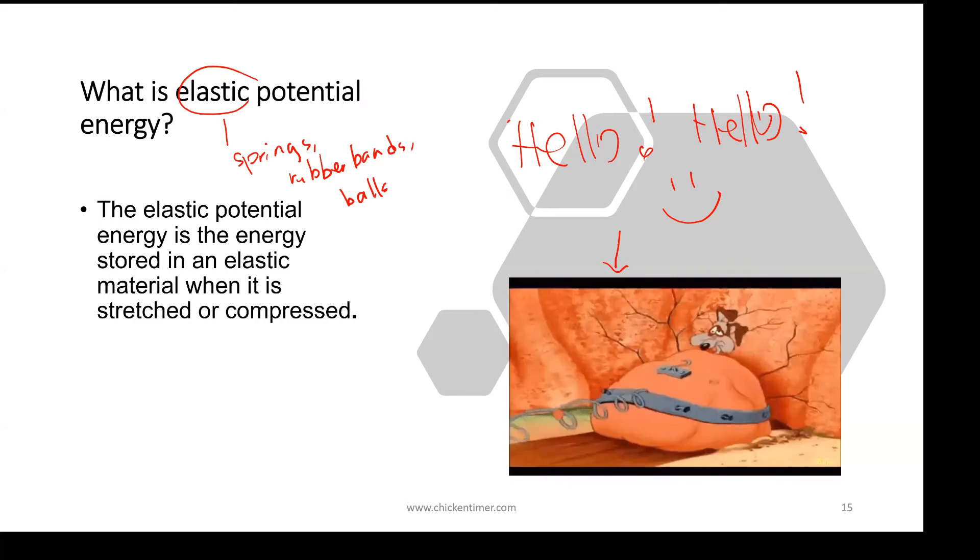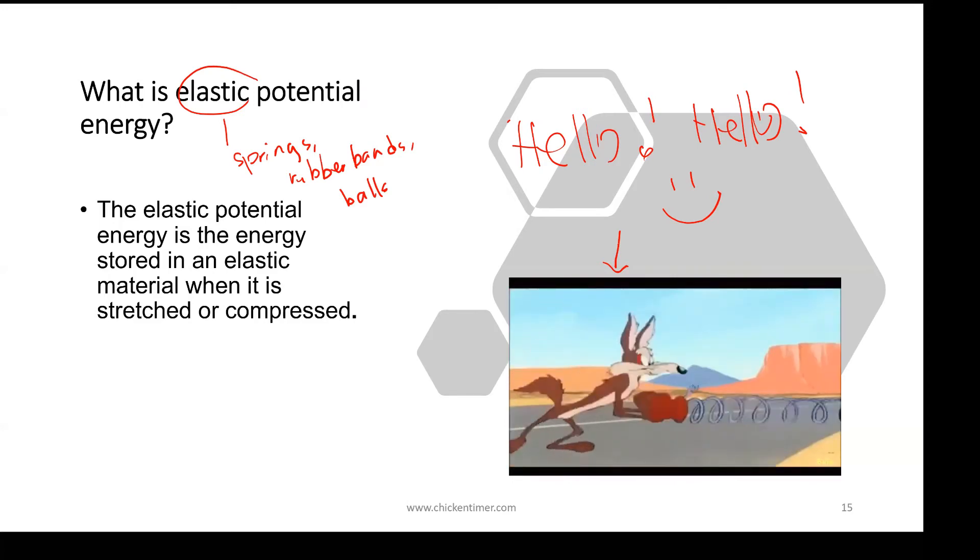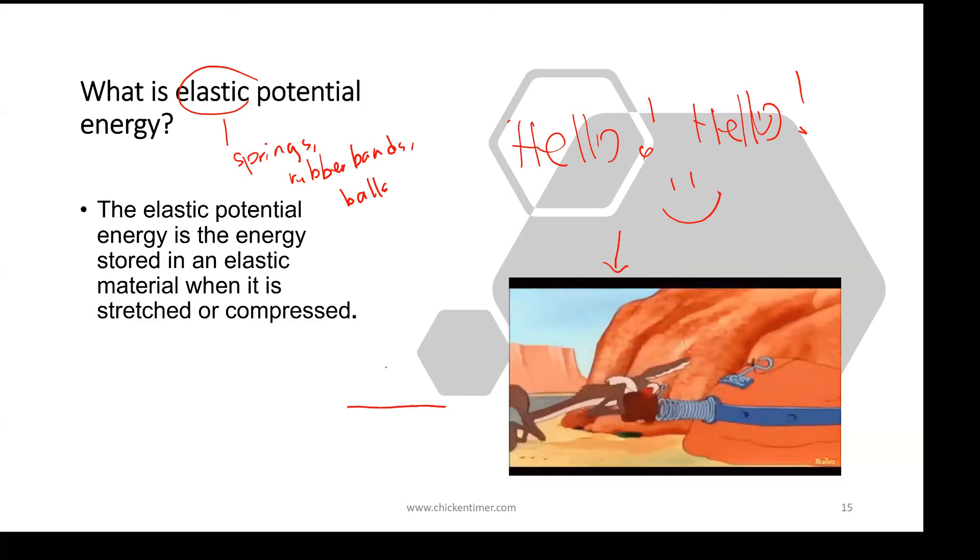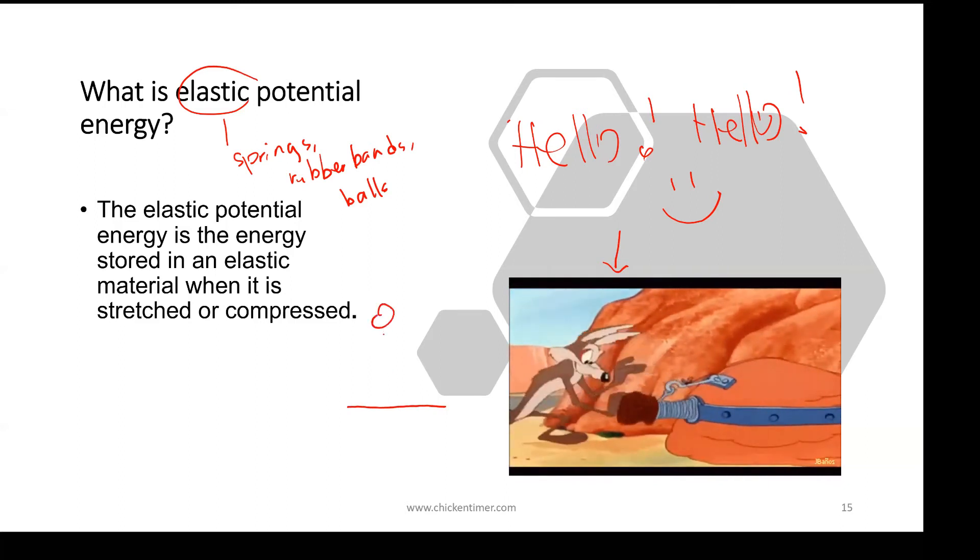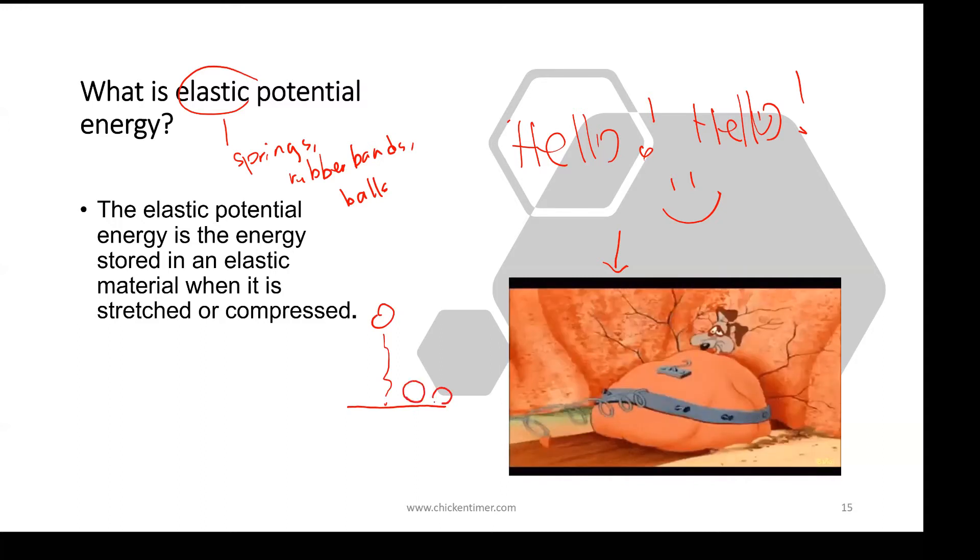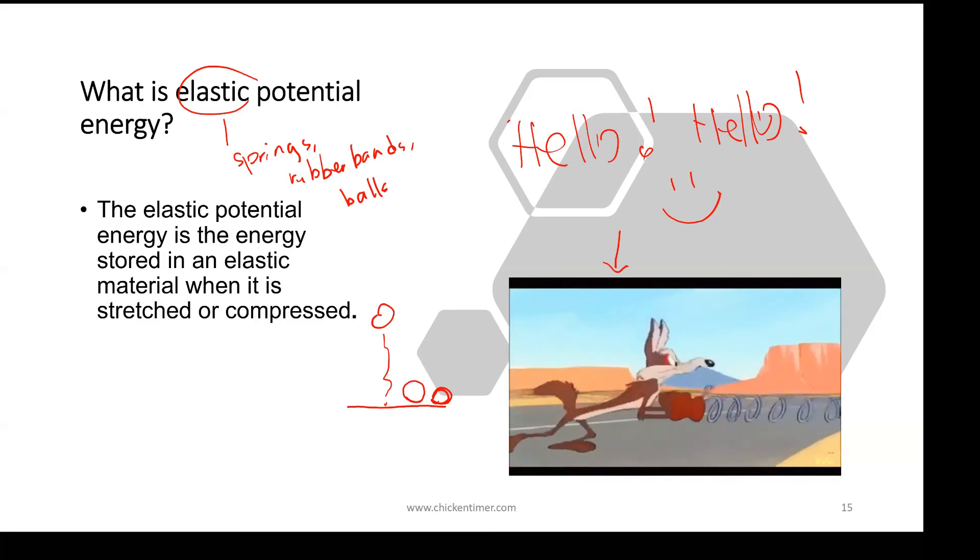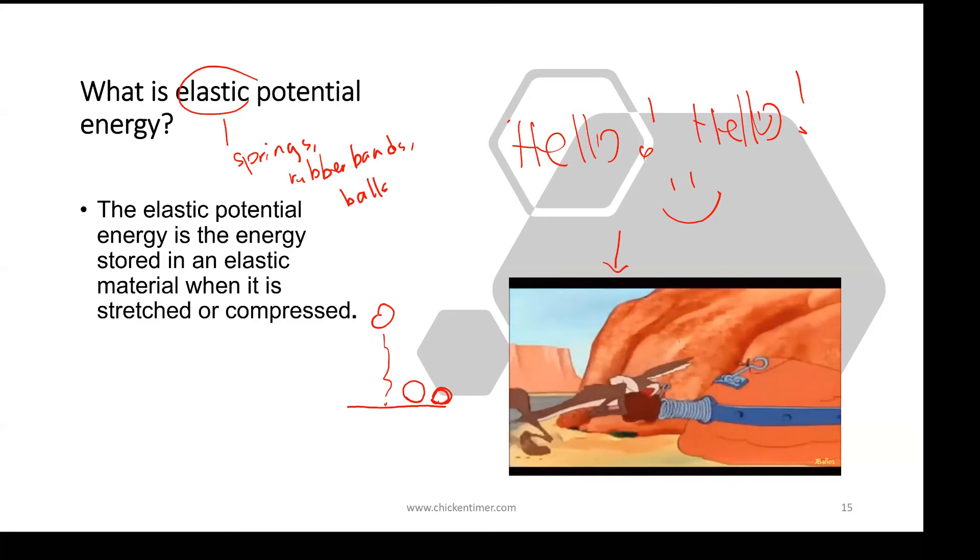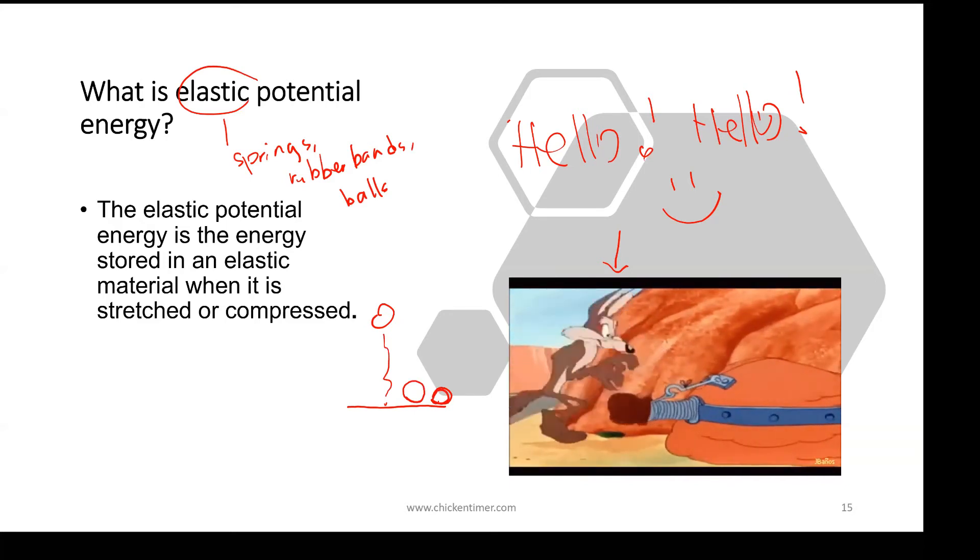So if you have a rubber ball that hits the ground, it drops and hits the ground. Once it hits the ground, it will not stay at perfect shape, it will compress a bit. On the ground, it will store some elastic potential energy.